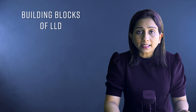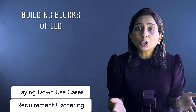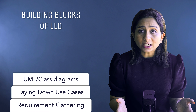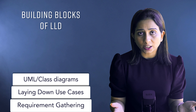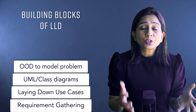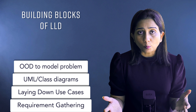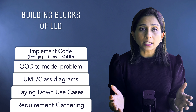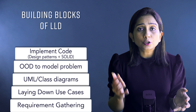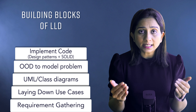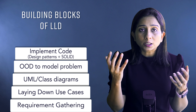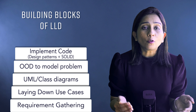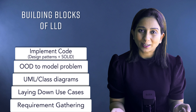The building blocks of low-level design comprise requirement gathering, laying down all the use cases, conversion of those use cases using the NVT technique to UML class diagrams, sequence diagrams and activity diagrams, and then using object-oriented design techniques to model the problem. Converting the class diagram into actual code using object-oriented modeling techniques is the low-level design space. The final step is implementation using object-oriented principles and design patterns.